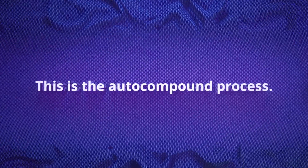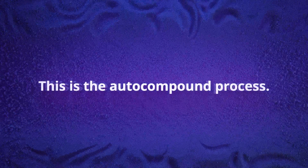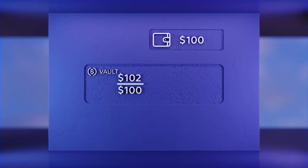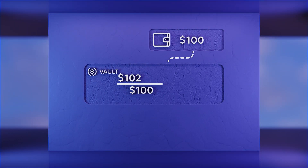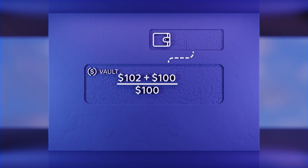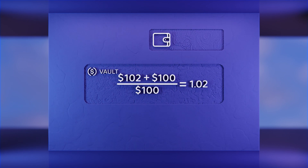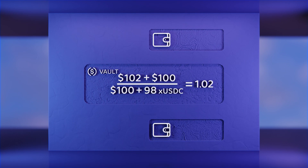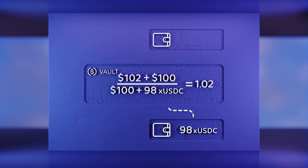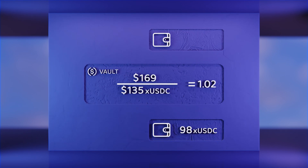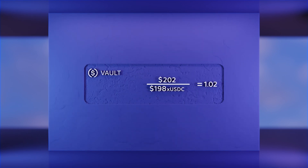This is the auto compound process. Now another investor deposits $100, but X USDC has accrued yield farming gains and its current price per full share is 1.02. At a price per full share of 1.02, the $100 USDC deposit gives the investor 98X USDC.